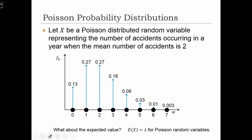What about the expected value of this probability distribution function? We could do the normal thing by taking the sum of k times pk, which in this case is going to be 0 times 0.13 plus 1 times 0.27 plus 2 times 0.27. And we'll do that for each of these outcomes. But you'll see here